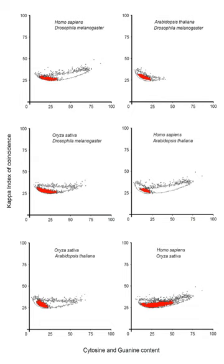The above promoter sequences are recognized only by RNA polymerase holoenzyme containing σ70. RNA polymerase holoenzymes containing other σ factors recognize different core promoter sequences.